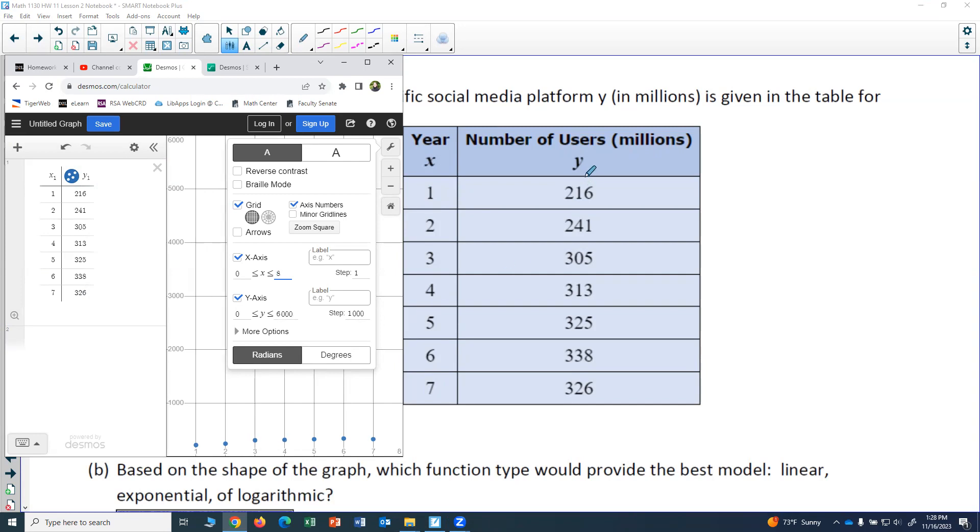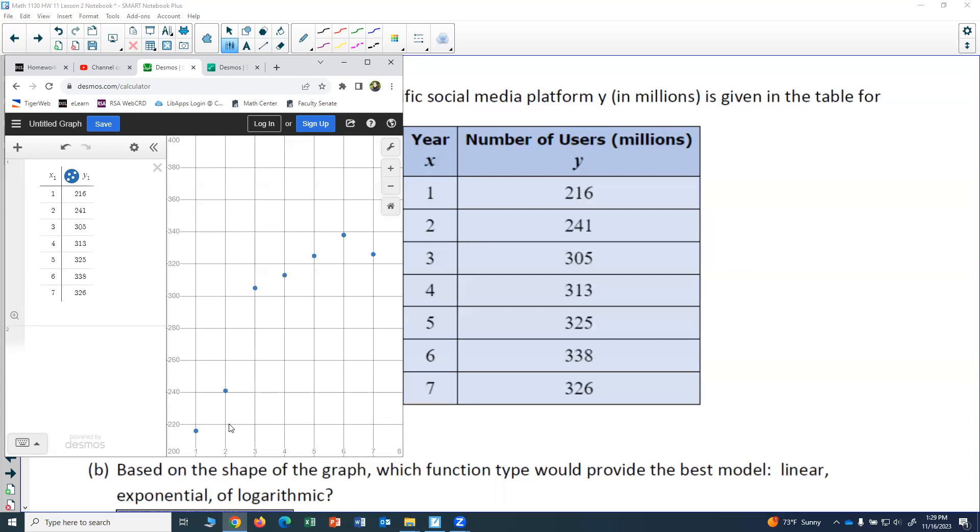And now notice y is going from 216 to 326. So I might go ahead and do maybe 200 to 400 with a scale of maybe 20. All right, let's see what that looks like.